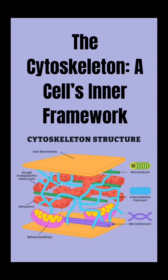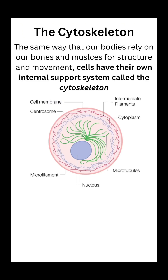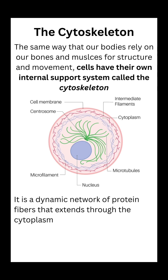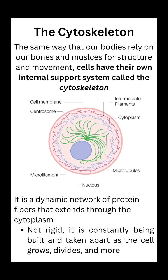Hey guys, so this video was actually requested and I think it's a really great topic because the cytoskeleton is really often overlooked since it's not always shown in our standard cell diagrams. But to our cells, the cytoskeleton is like infrastructure — our cells are completely reliant on it. It's going to span the entire cell and even connect to the plasma membrane. That membrane isn't static; it's dynamic, constantly moving, reshaping, assembling, and breaking down, just like the cytoskeleton. And this is essential for things like cell movement and division.